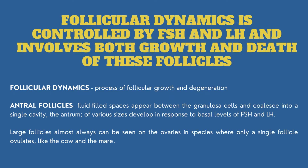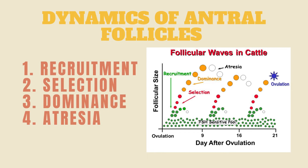Follicular dynamics is controlled by FSH and LH and involves both growth and death of follicles. Follicular dynamics is the process of follicular growth and degeneration. Antral follicles are fluid-filled spaces that appear between the granulosa cells and coalesce into a single cavity called the antrum. They develop in response to basal levels of FSH and LH. Large follicles can almost always be seen on the ovaries in species where only a single follicle ovulates, like the cow and the mare. The dynamics of antral follicles involve four processes: recruitment, selection, dominance, and atresia.